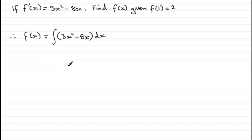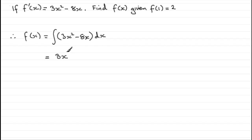To integrate these two terms is very easy because all we've got to do is add 1 to the power and divide by the new power. So we've got 3x squared at the moment, and if we add 1 to the power it's going to be 3x cubed, divided by that new power which is 3.